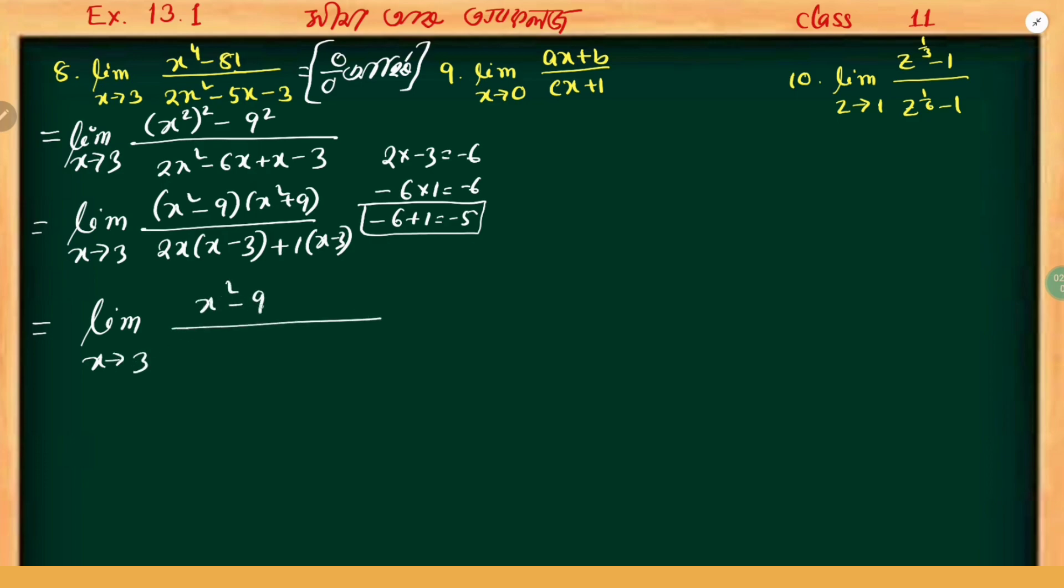We write limit x tends to 3, x squared minus 9 in the numerator. Then we factor x minus 3 times x plus 3 times x squared plus 9 divided by x minus 3 whole into 2x plus 1.